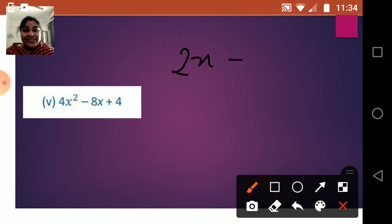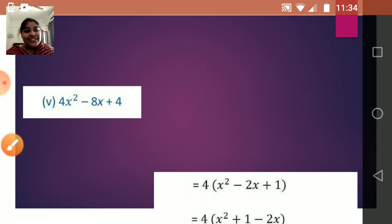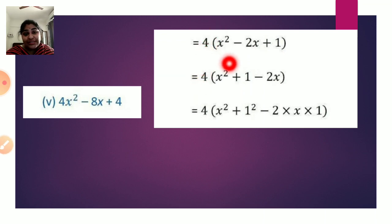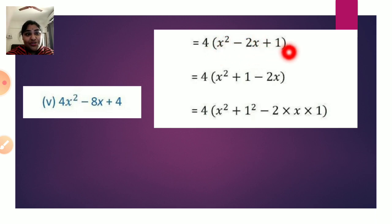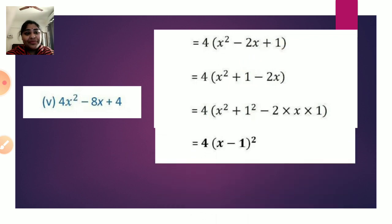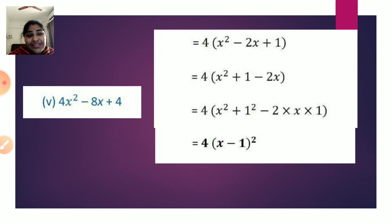There is another method for this sum. From 4x² - 8x + 4, take 4 as a common factor outside, giving 4(x² - 2x + 1). Inside the bracket it is in the form a² - 2ab + b² with a = x and b = 1, so it becomes 4(x - 1)². Both methods give the same answer. Whenever you find common factors, you can take them outside first.